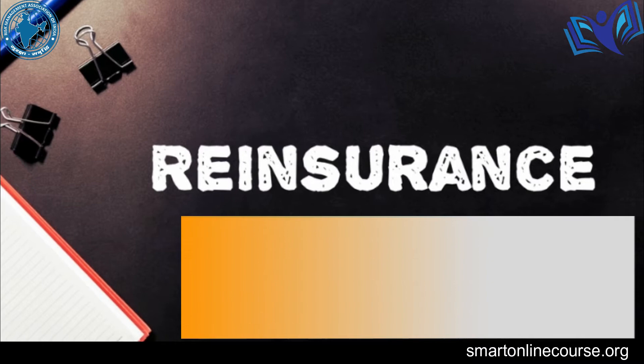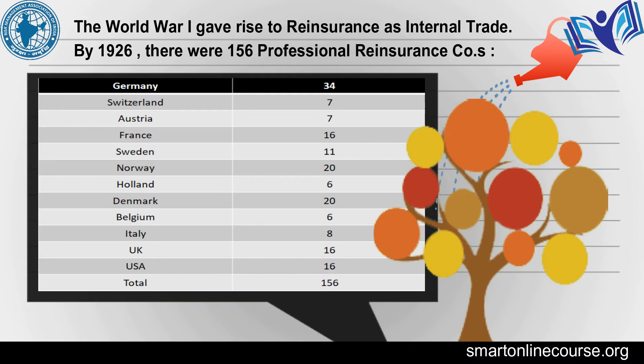World War I gave rise to reinsurance as internal trade in Europe. In 1926, there were 156 professional reinsurance companies. The countries included Switzerland, France, Sweden, Norway, Holland, Denmark, Belgium, Italy, UK.